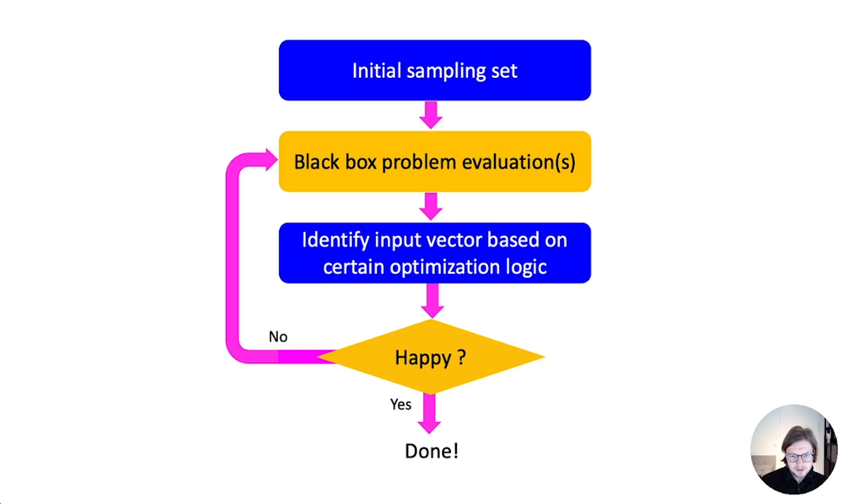And normally to get the best solutions, we use optimization algorithms which always work in the same way. We first have an initial sampling set where we say at these points we want to do our first black box evaluations. Then we do the black box evaluations and look at how the inputs and the outputs are correlated to each other, and follow a logic somehow that we create a new point.